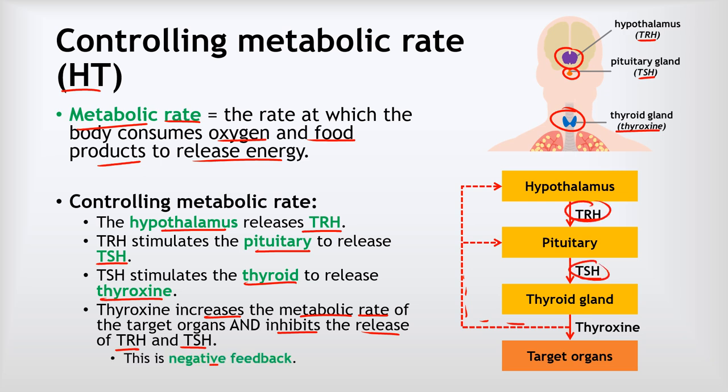We call this type of system negative feedback. As a side note, some people naturally release more thyroxin than others — we might say they have an overactive thyroid. Those people tend to be very slim because they're quickly burning through the energy stored in their food and not storing much excess as fat. Equally, some people have underactive thyroids where they don't release enough thyroxin, which makes it much easier for them to gain weight because they don't burn through the energy in their food so quickly and therefore store the excess as fat.